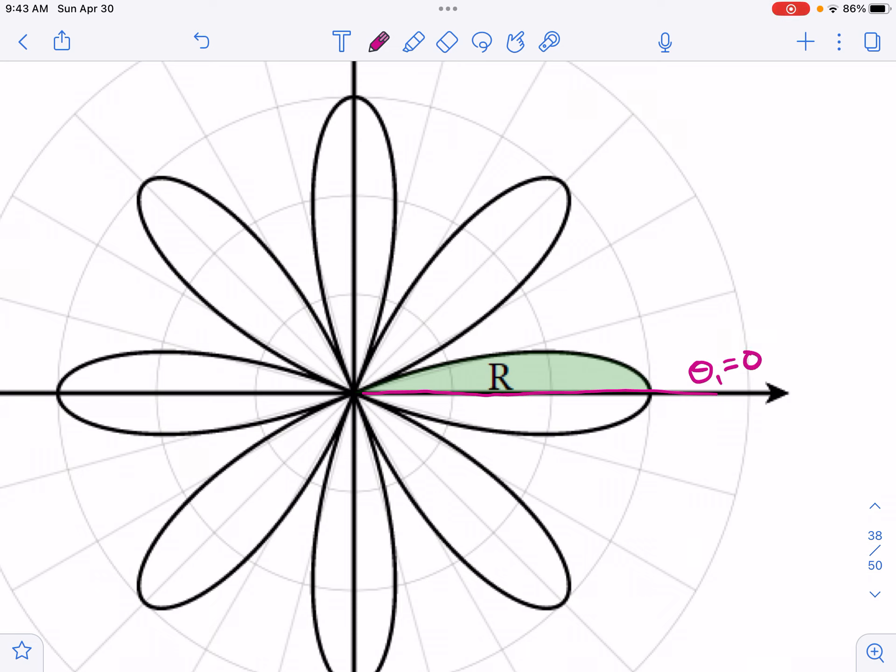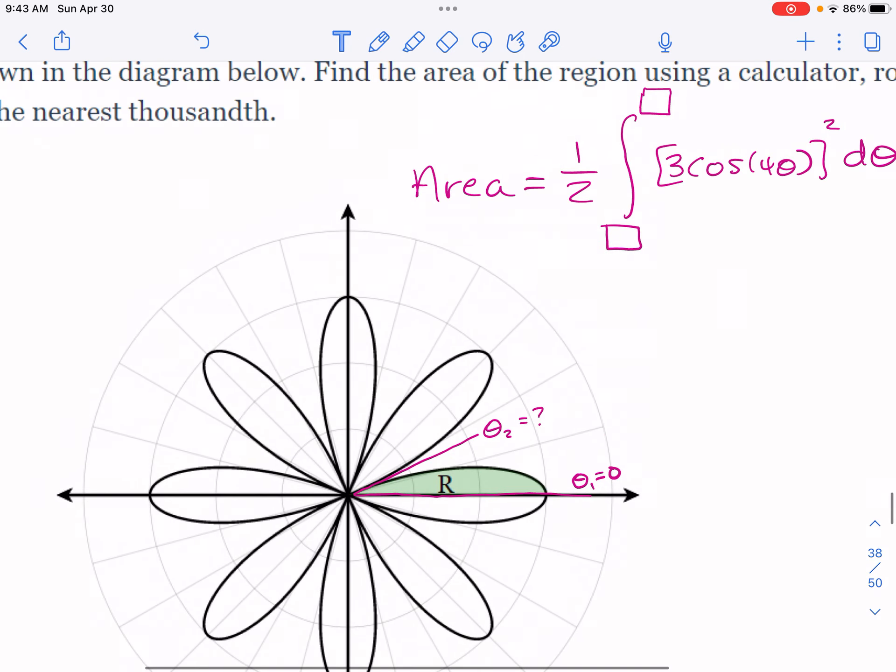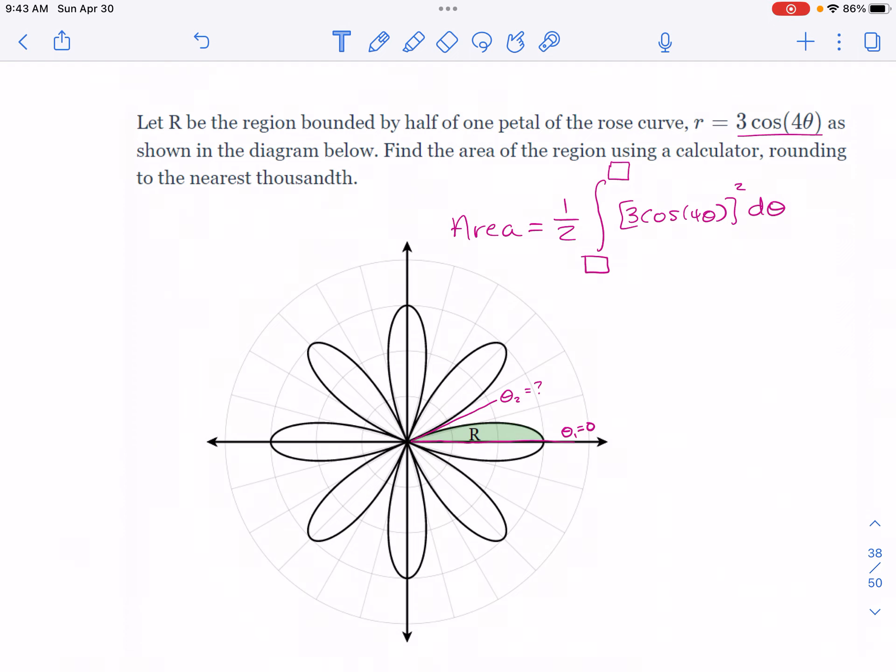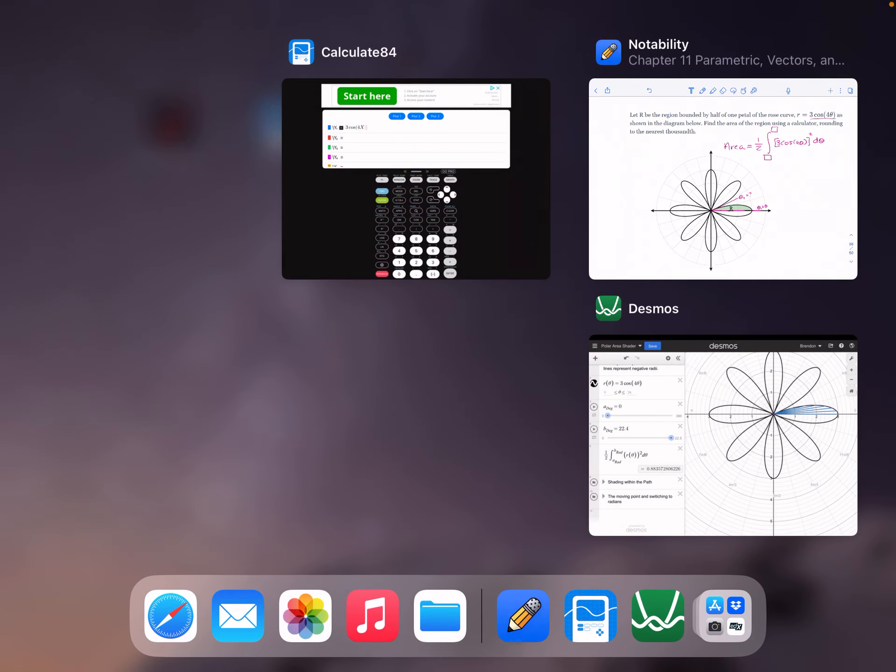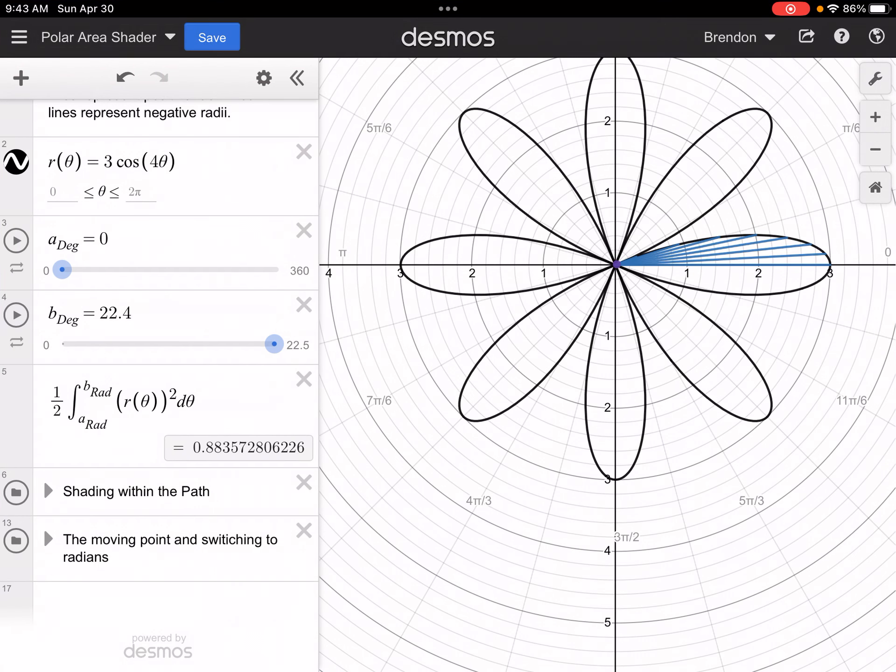Then this curve gets traced as theta progresses from zero to, let's just say 90 degrees for now, as angles rotate positively. Area is going to be swept out into this region, and so what we really need to know is what that second angle is. It looks like it's about here. Let's just call this θ₂—we don't know what that is, and that is what we need to go find so that we can put in our limits of integration and compute.